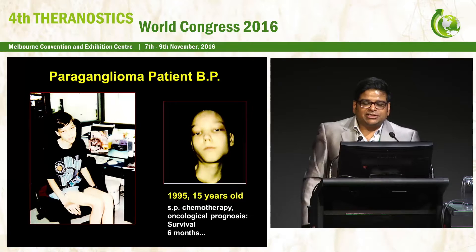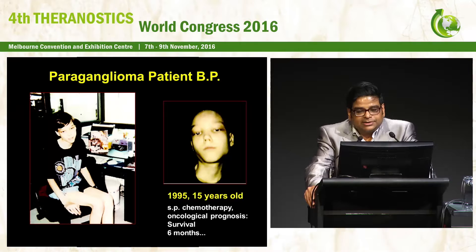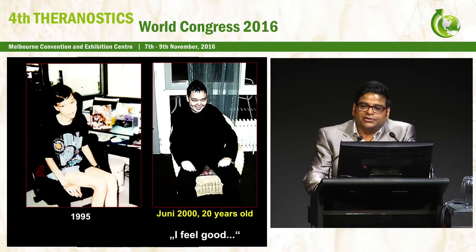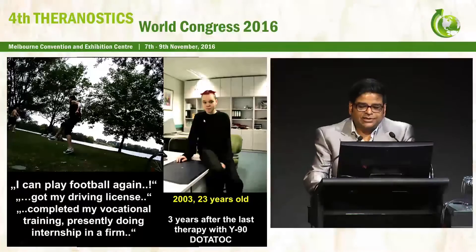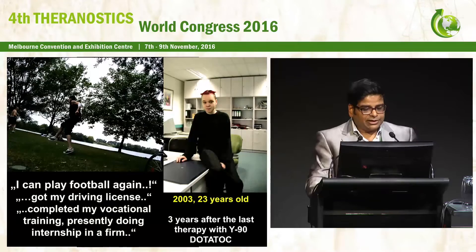Towards the end, I would like to present the first patient ever treated with yttrium-90 in Europe, treated by Professor Baum in 1997. This was a 15-year-old boy, status post-chemotherapy, with a very poor oncological prognosis of survival of just six months. He underwent three cycles of intra-arterial yttrium-90 PRRT, and at 20 years old you can already see the difference. Three years after the last therapy, he almost returned to normal life and, very importantly for a German boy, was able to play football again.